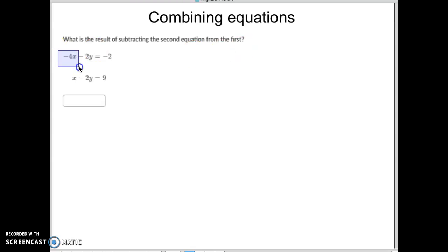So, if I take a negative 4x and I subtract an x. Remember, a negative 4x and subtract an x makes a bigger negative. So that becomes negative 5x. Okay, boom, negative 5x right there.